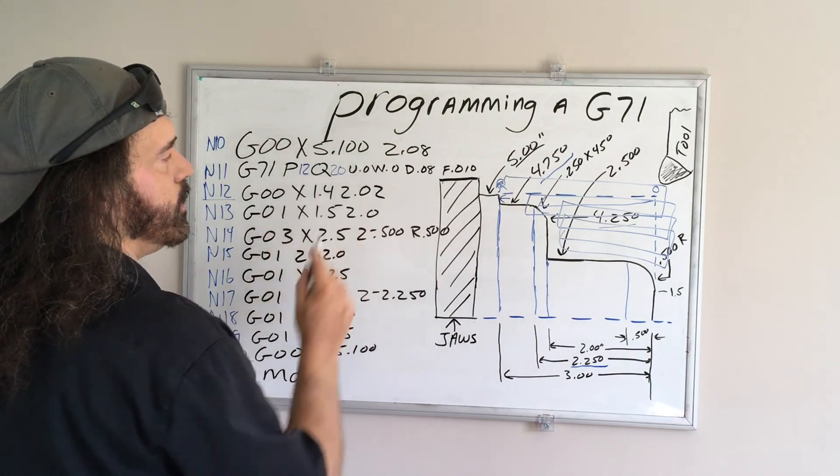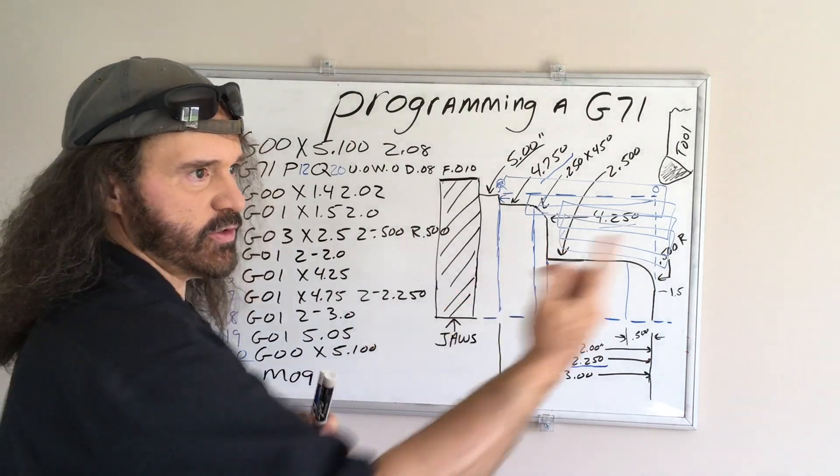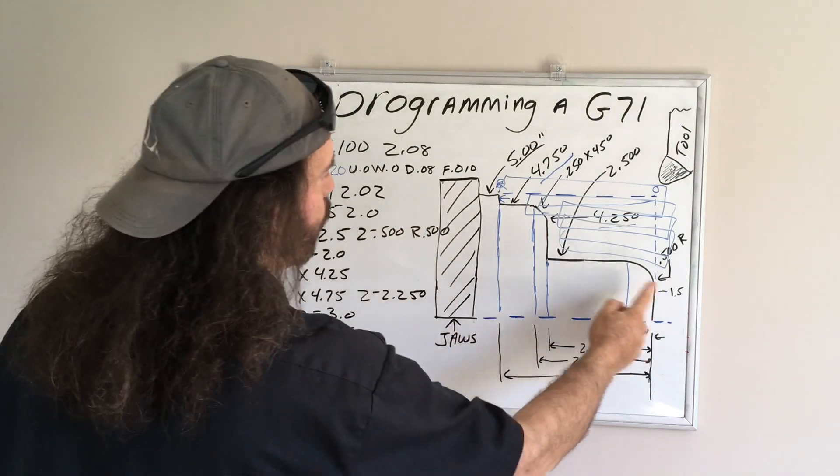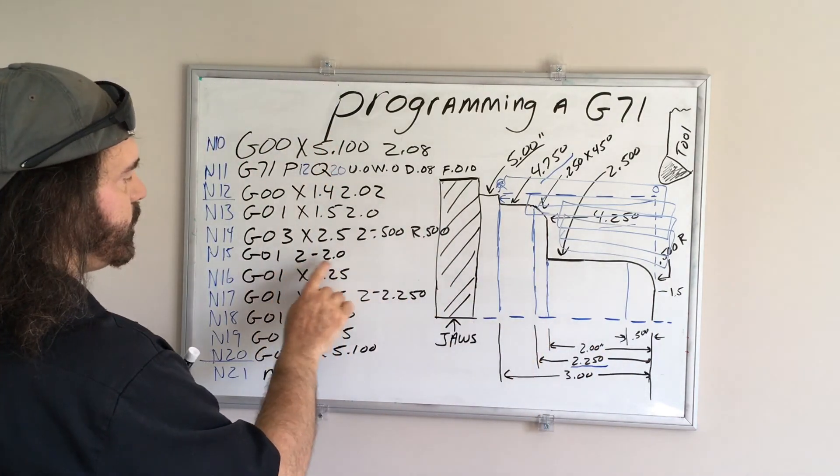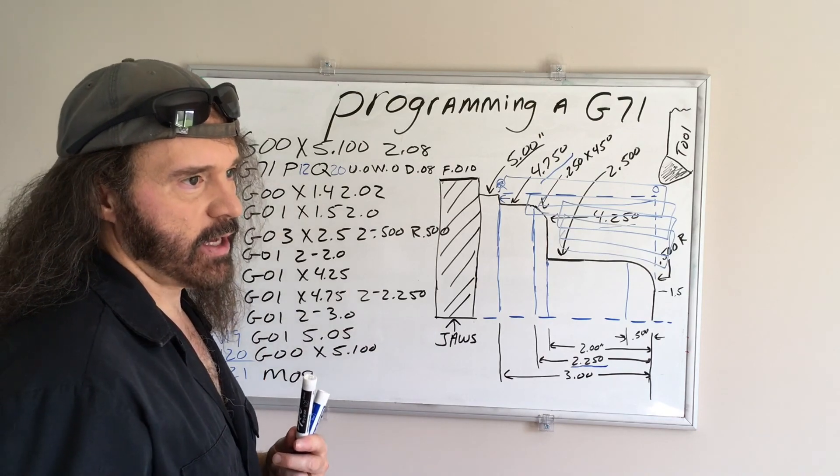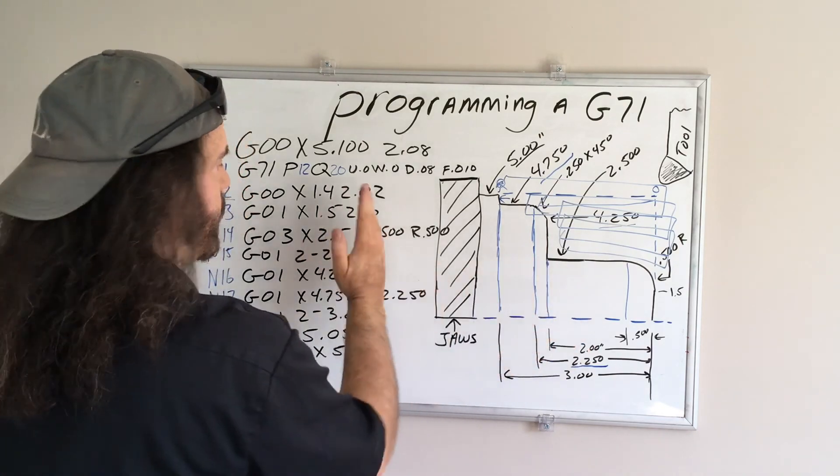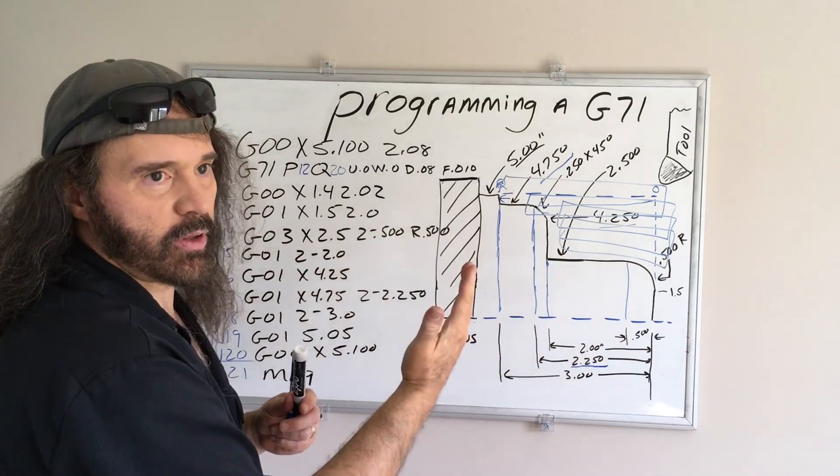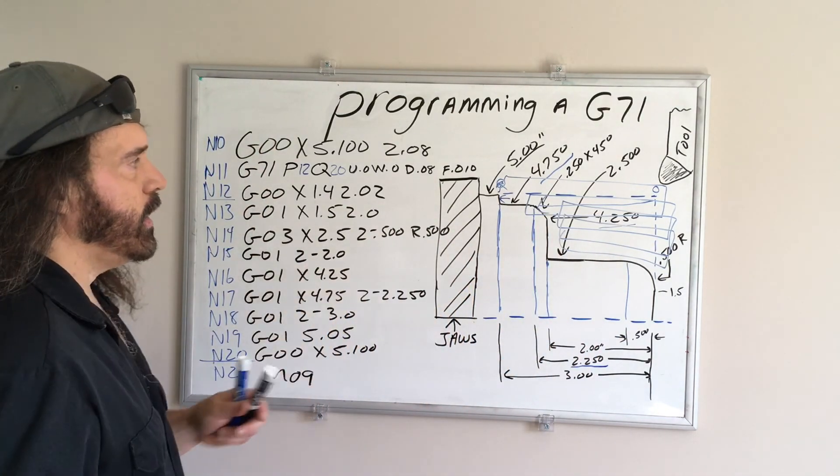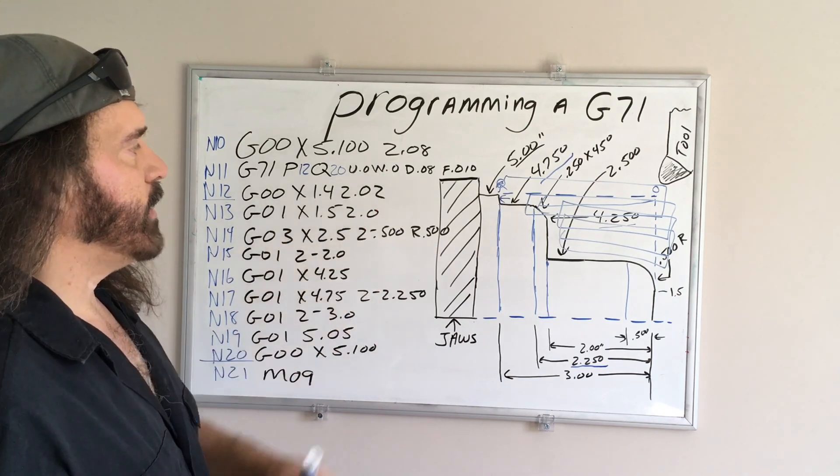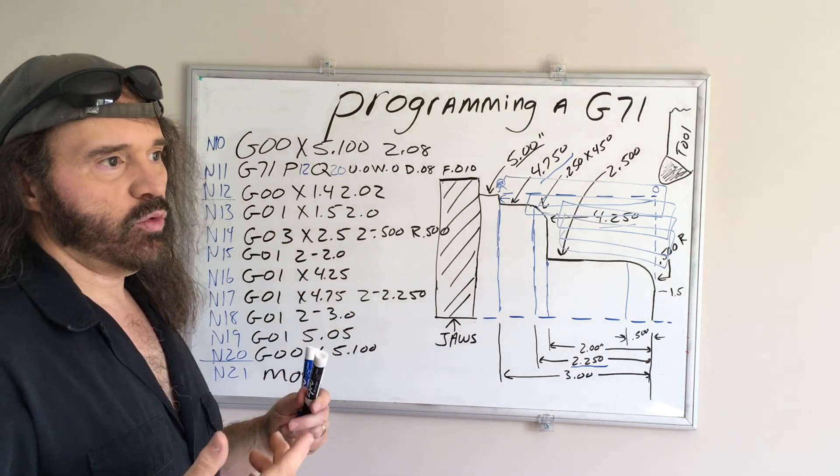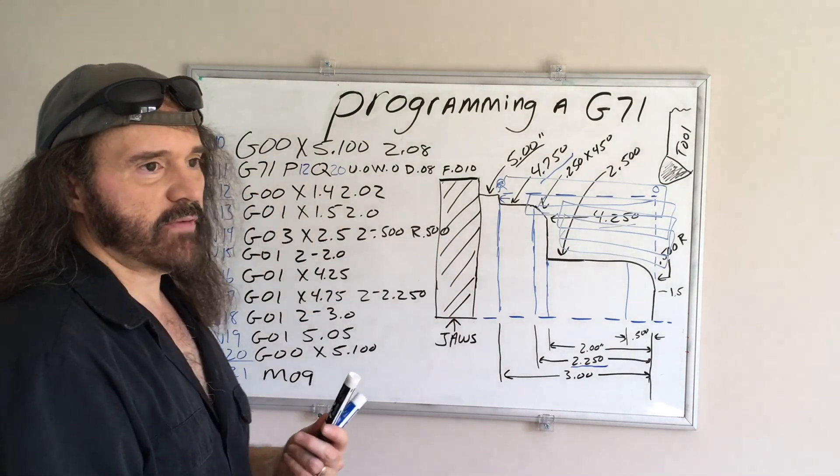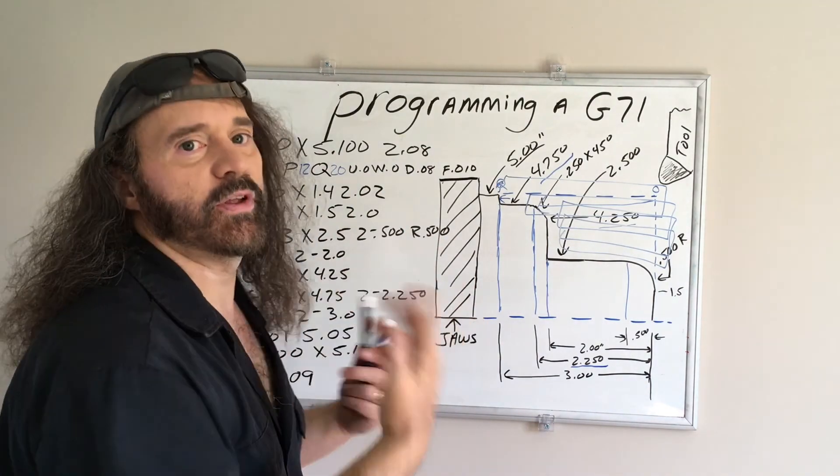W-code, that is how far your Z is going in. If it's set to zero, it's going to go right to whatever your Z dimension is. If you add a positive value to that, it's going to stay in front, and it won't do the complete depth. So if you had Z negative 2.0, and you had 20 thousandths on your W-code, it would actually do Z negative 1.980, and then when you call up a G70, it would then do the finish pass.